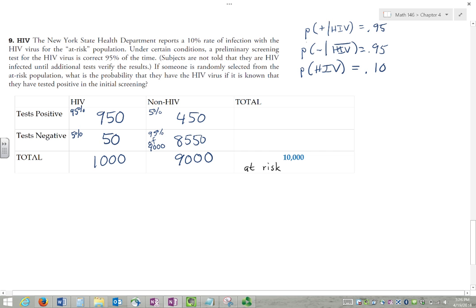And finally, we can add across the rows. 950 plus 450 is 1,400. 50 plus 8550 is 8,600, and those two numbers add up to 10,000, so everything works out.